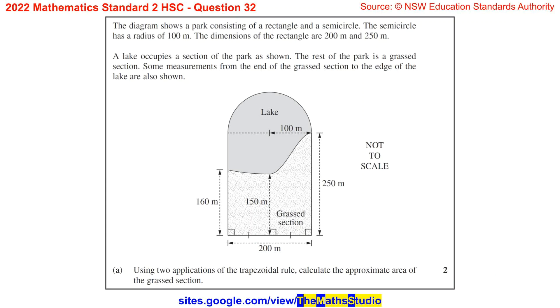Question 32. The diagram shows a park consisting of a rectangle and a semicircle. The semicircle has a radius of 100 metres.